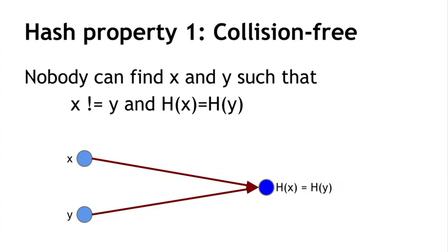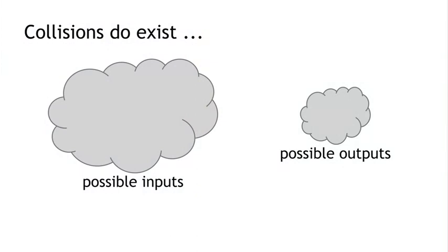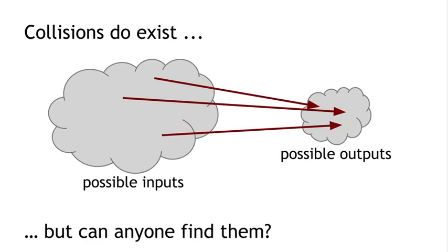One thing to notice is that I said nobody can find — I didn't say that there is no collision. Because if you think about it, there has to be a collision. Collisions do exist. Over here on the left, I'm depicting all of the possible inputs to this function, which can be a string of any size. Over here, I have all of the possible outputs, which has to be a string of 256 bits in size. So the right-hand side, the outputs, there are only 2 to the 256 possibilities. And so if you think that every point on the left is going to be mapped by an arrow to some point on the right, it has to get crowded. In fact, there will be a very large number of possible inputs that map to any particular output.